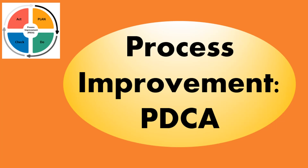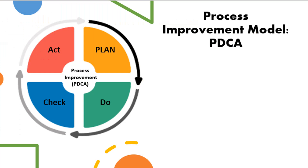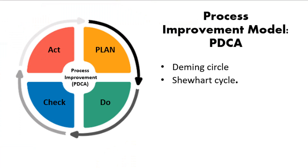Hello everyone and welcome to Techytube. Today we will be talking about one of the simplest process improvement models, the PDCA model, which stands for Plan, Do, Check, Act. This model is also called the Deming Circle or the Schuhart Cycle.